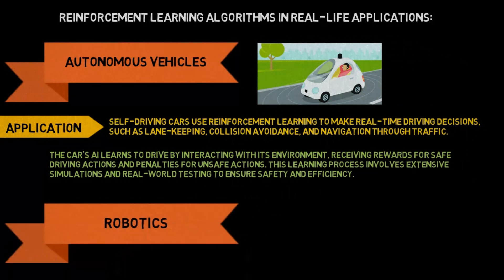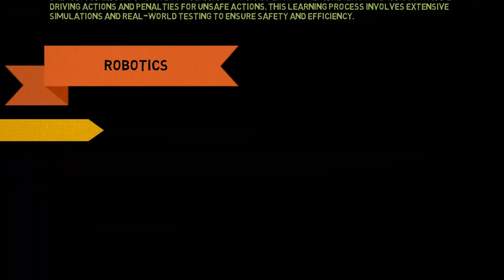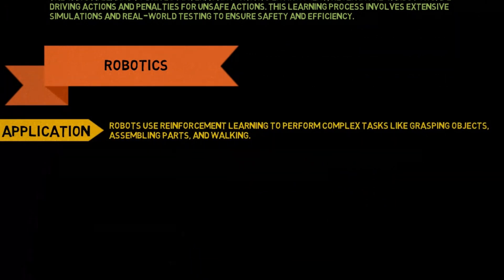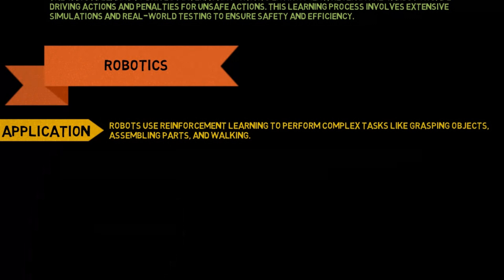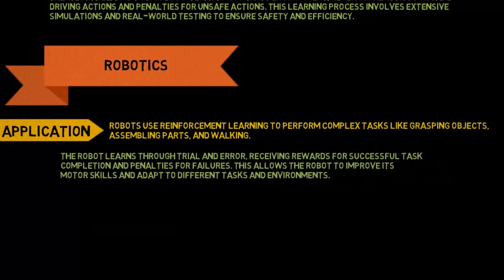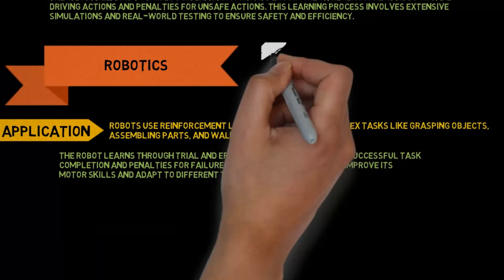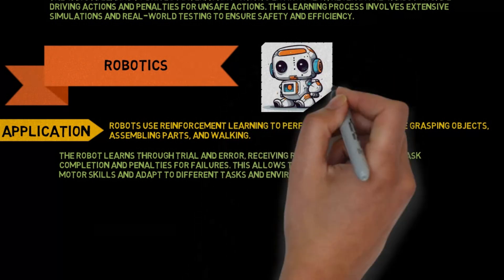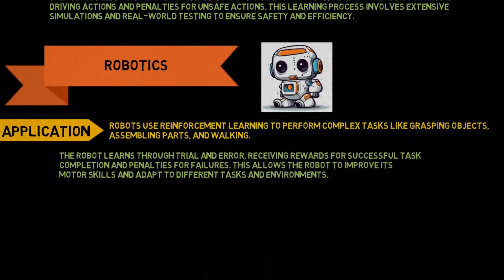In robotics, robots use reinforcement learning to perform complex tasks like grasping objects, assembling parts, and walking. The robot learns through trial and error, receiving rewards for successful task completion and penalties for failures. This allows the robot to improve its motor skills and adapt to different tasks and environments.